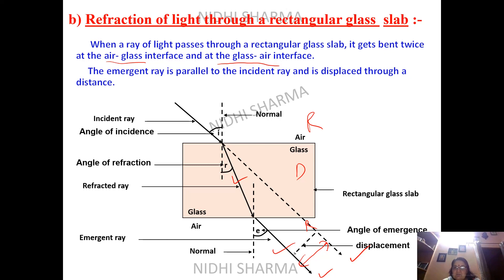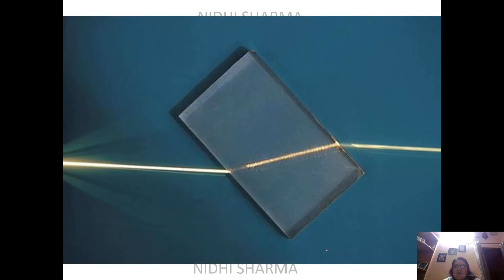Now, if you want to see the real picture of a glass slab where a ray of light enters, you can see how it bends and how it comes out.